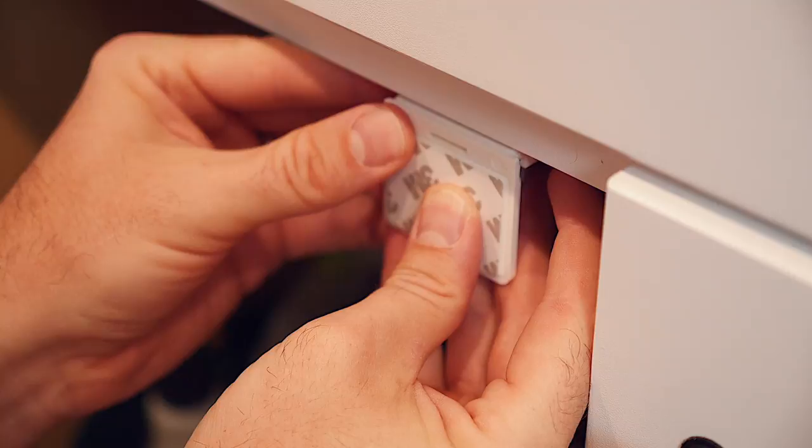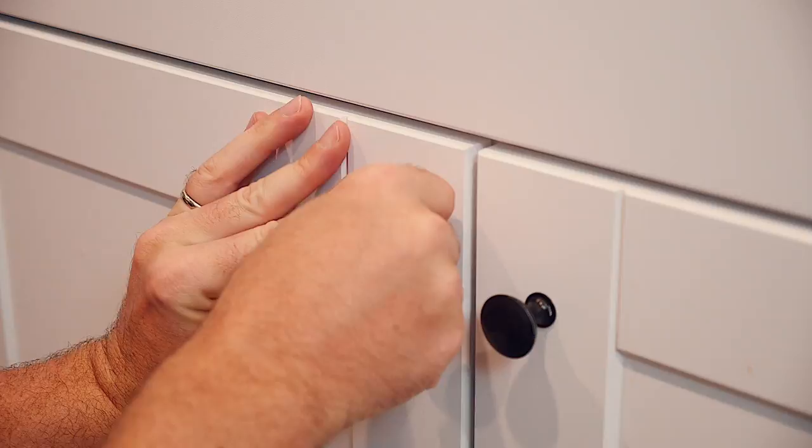Remove the adhesive backing from both the lock and the latch. Place the latch along the inside top edge of your cabinet and press firmly.